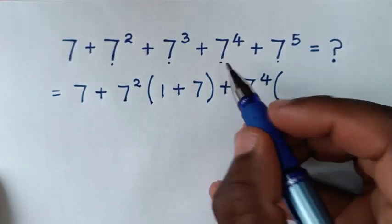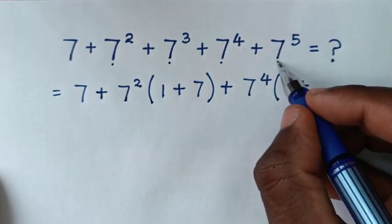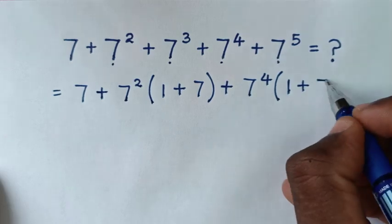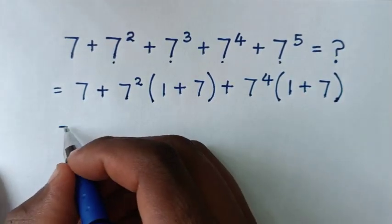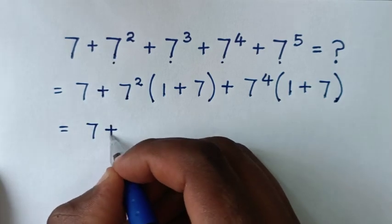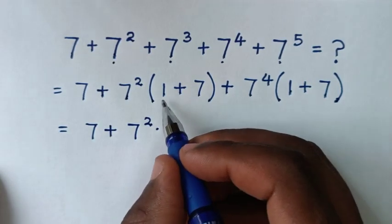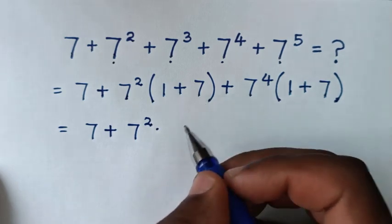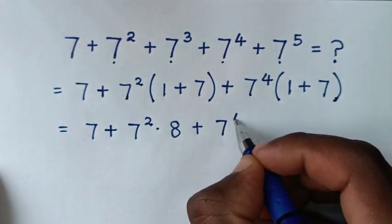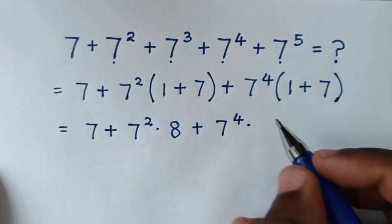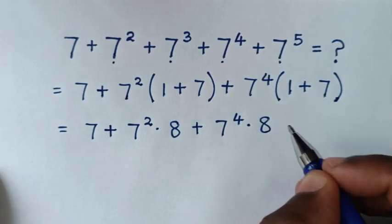Then 7 power 4 divided by 7 power 4 is 1, plus 7 power 5 divided by 7 power 4 is 7, bracket. Then it will be equal to 7 plus 7 square, times inside the bracket 1 plus 7, which is 8, then plus 7 power 4, times inside the bracket 1 plus 7, which is 8.